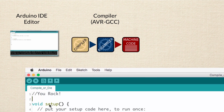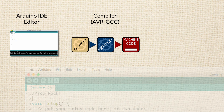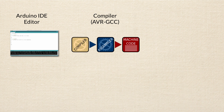In the Arduino IDE, the button that looks like a check mark — the verify button — when you press it, it compiles the code using a compiler software called AVR-GCC. This compiler software does a bunch of stuff: it rearranges some code, checks for errors. This is like the professional editor at the publishing company.